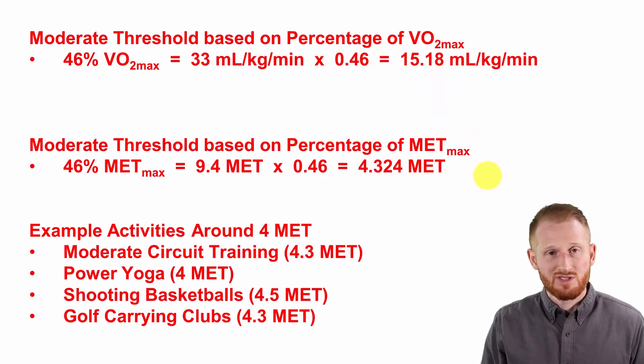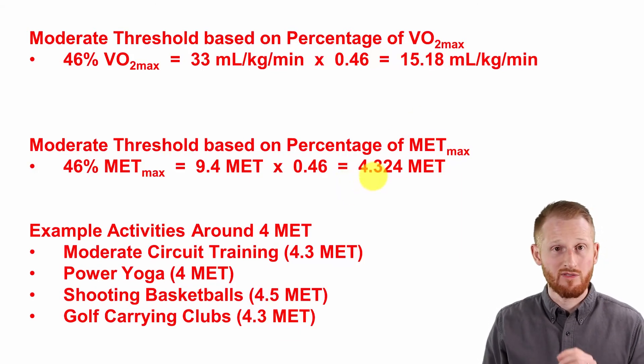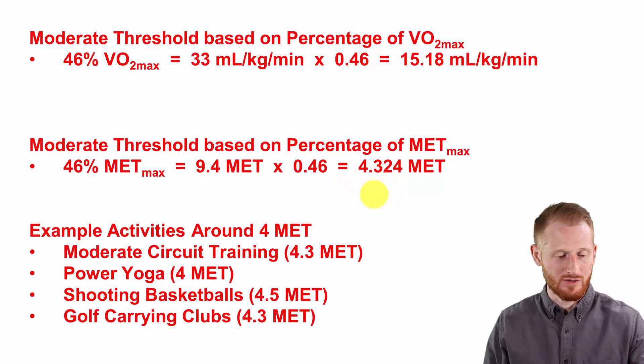So let's talk quickly about the METs here. So we're aiming for 4.3 METs in order to reach moderate intensity exercise. What are some activities she can do?